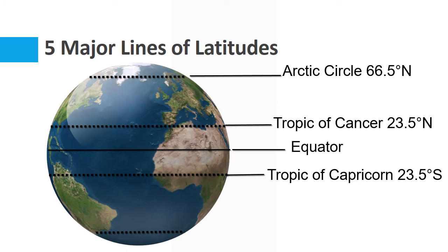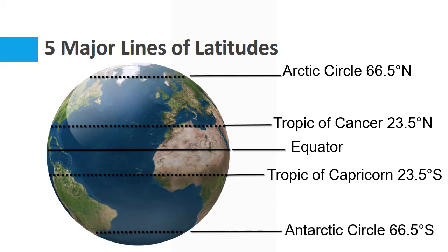The next latitude is the Arctic Circle. It is located at 66.5 degrees north. And this one is the Antarctic Circle. It is located at 66.5 degrees south.